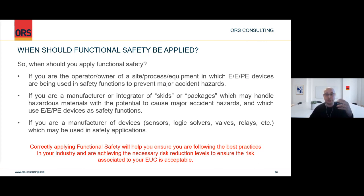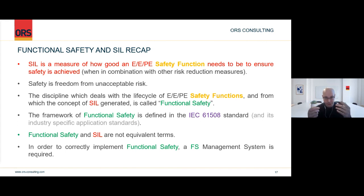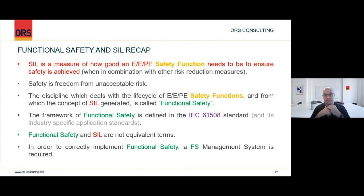Correctly applying functional safety will help you ensure you are following best practices in your industry and achieving the necessary risk reduction levels to ensure that risk associated to your equipment under control is acceptable. A little recap before questions: SIL is not a field of engineering. SIL is a number — a measure of how good an electrical, electronic, programmable electronic safety function needs to be to ensure safety is achieved, when combined with other risk reduction measures — normally not on its own. When combined with all your other risk reduction strategies, including alarms and mechanical devices which are not E/E/PE, you need to make sure your safety functions are good enough to achieve safety — which is freedom from unacceptable risk.